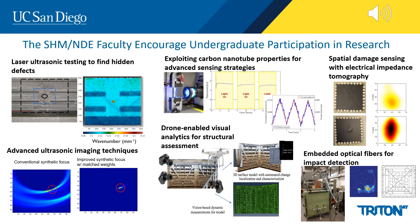Drones with camera or video payloads are used in the lower center figure to create survey maps and highly sophisticated digital renderings of as-built structures, from which computer vision methods may be used to find damage or other anomalies. Finally, in the lower right, optical fibers are embedded inside composites during fabrication to create permanent smart structures that can self-detect when they have been impacted.